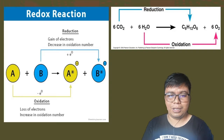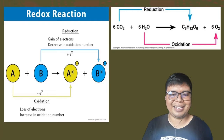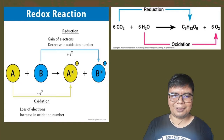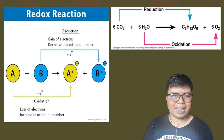I want you to study this diagram of a redox reaction. Here we have A plus B equals A plus B, but what is the difference? The reactants have no charges, but the products have charges — they have become ions.